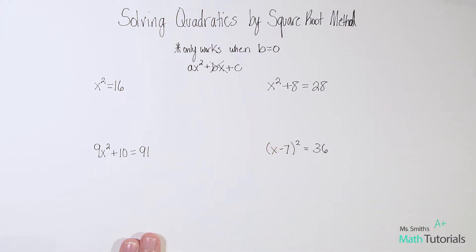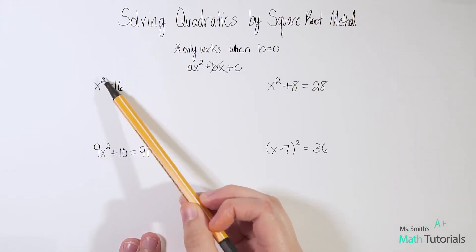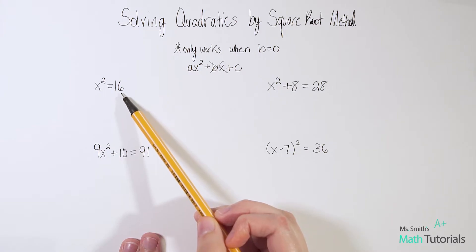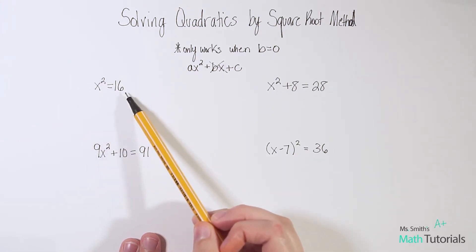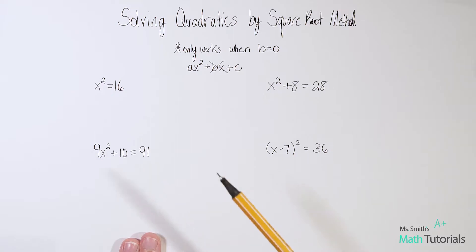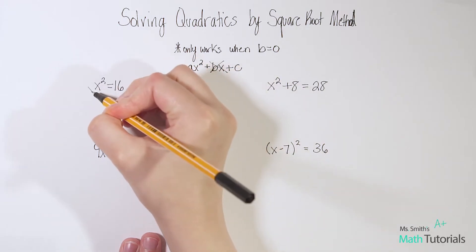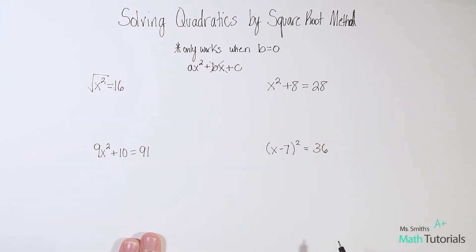Essentially how this works is you want to get x squared alone on one side of the equation. You'll notice in this first one that has already happened — I've got x squared completely alone and on the other side I have 16. This is a perfect situation to use the square root method. All the square root method says is that we can get rid of a power of 2 by taking the square root. It's kind of like crossing out that little 2 and the square root — they both just go away.